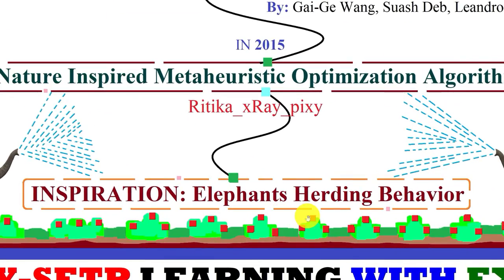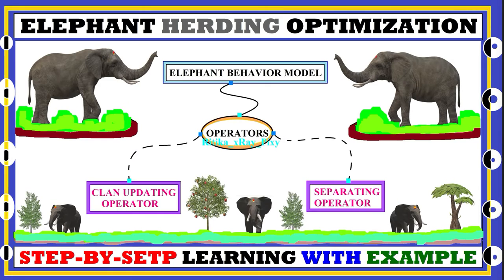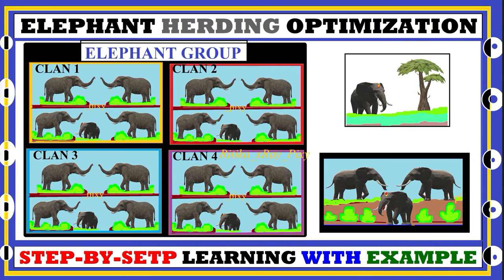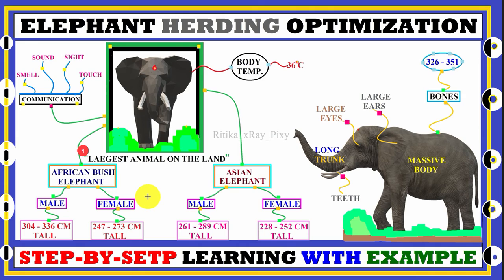Since this algorithm is inspired by the herding behavior of elephants in real life, we will first try to understand elephants' herding behavior so that we can easily understand the algorithm's virtual simulation. The elephant is the largest land mammal on Earth, and you can see here the elephant's basic body structure — they have a massive body.